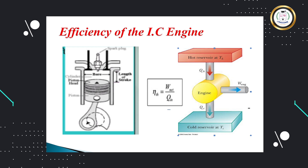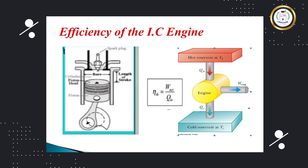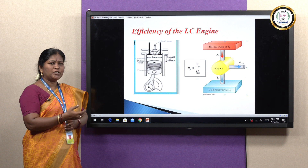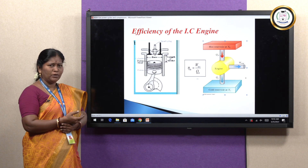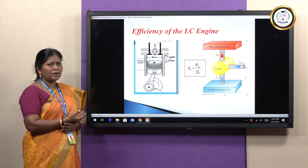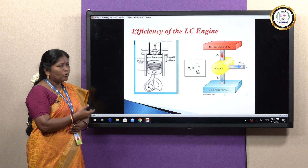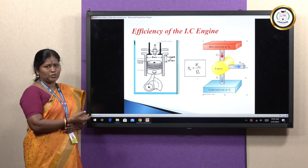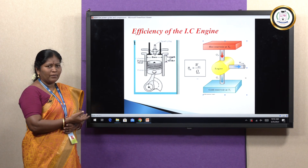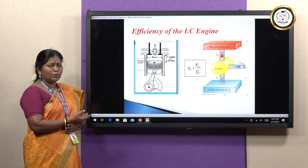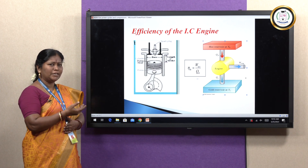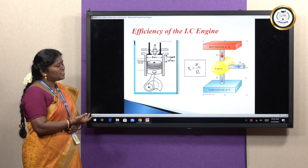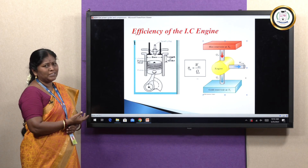Now, how are we going to calculate the efficiency of the IC engine? As we know, efficiency is based on output by input. Here, the output is work energy or mechanical power, and the input is the heat supplied. So we can get the efficiency of the engine system.